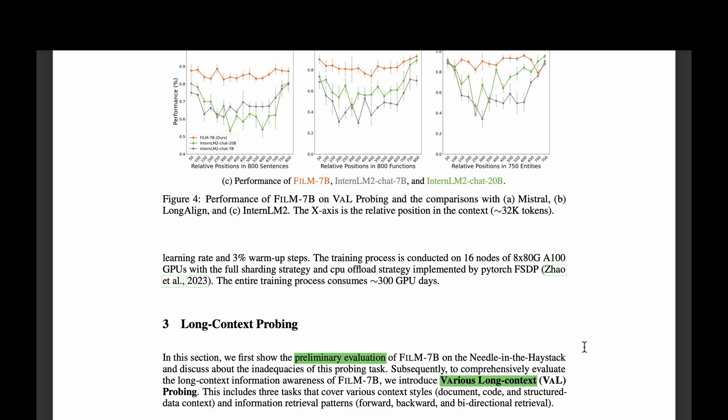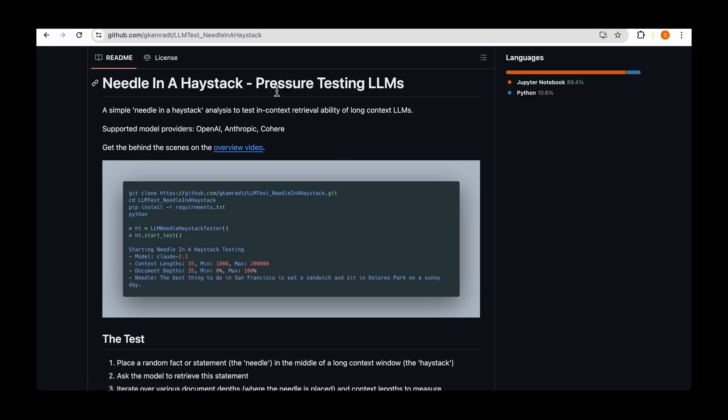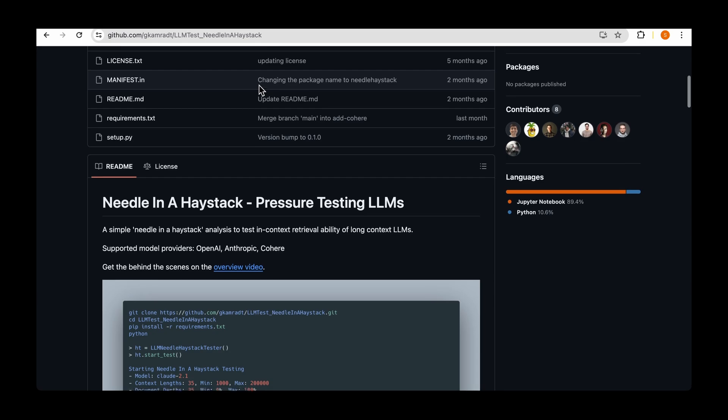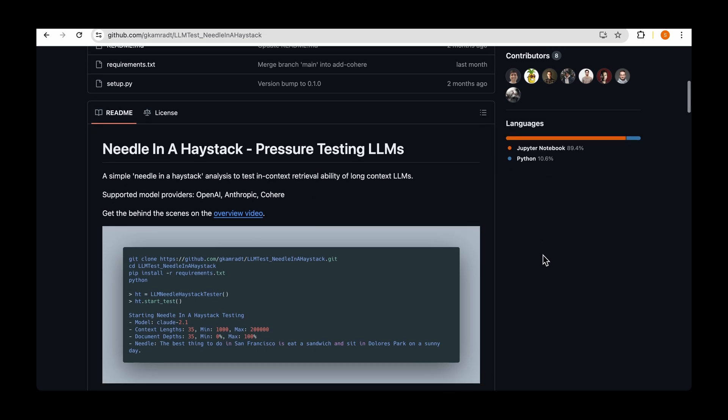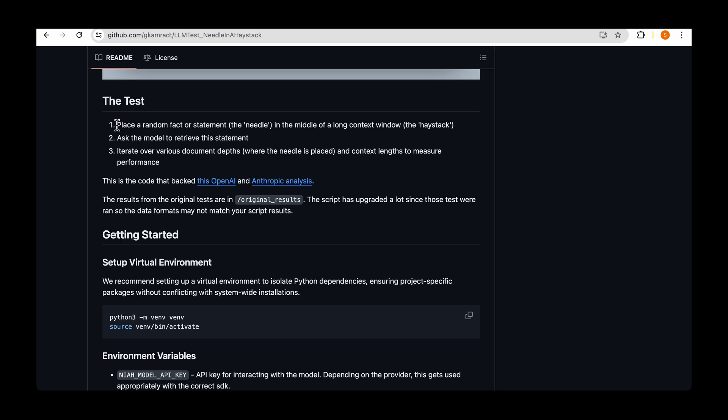The second contribution of the paper is in terms of evaluation and they introduce a new concept called various long context probing. So what is the usual standard go-to approach for long context probing? And that is the use of needle in the haystack. Needle in the haystack is a repository for pressure testing LLMs. It's a simple needle in the haystack analysis, as the name says, to test in-context retrieval ability of long context LLMs.